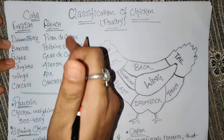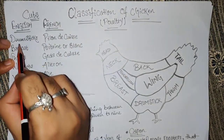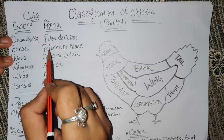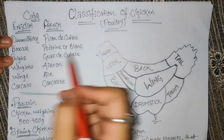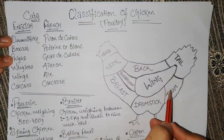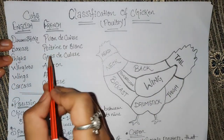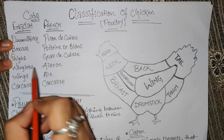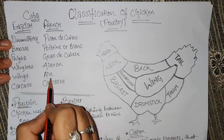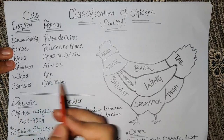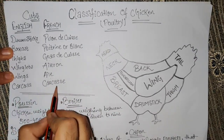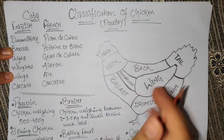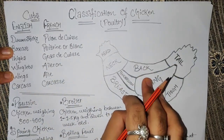These cuts are quite important. The drumsticks belong to the leg area. The breast is called 'poitrine' or 'blanc' in French. The thigh area is called 'cuisse' in French. Then we have winglets, which are called 'aileron,' and wings called 'aile.' We also have the carcass — the bones remaining after removing all the meat, which we use for stock.